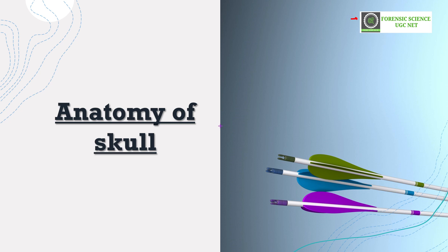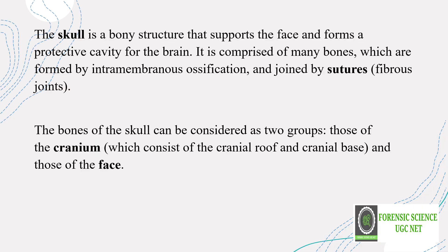Today the topic is anatomy of skull — what is skull and how it looks. The skull is a bony structure; it comes under our skeleton system. It supports your face and forms a protective cavity to protect the brain. Our skull supports your facial tissues and protects your brain — it is essentially a protective cage for the brain.